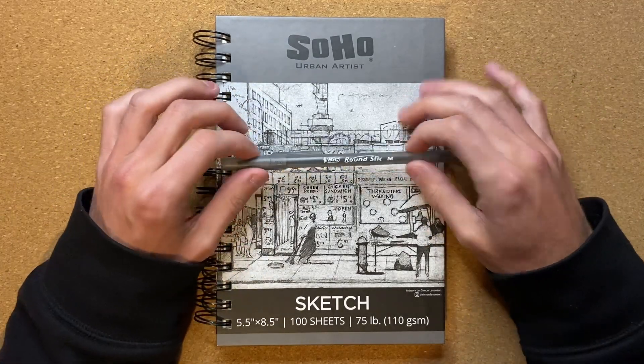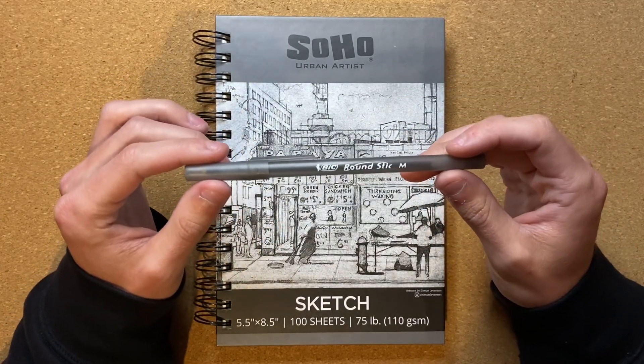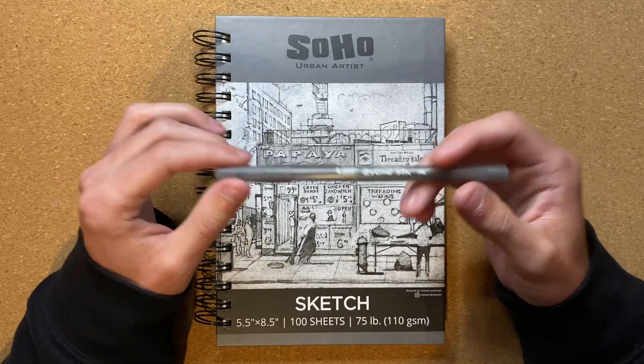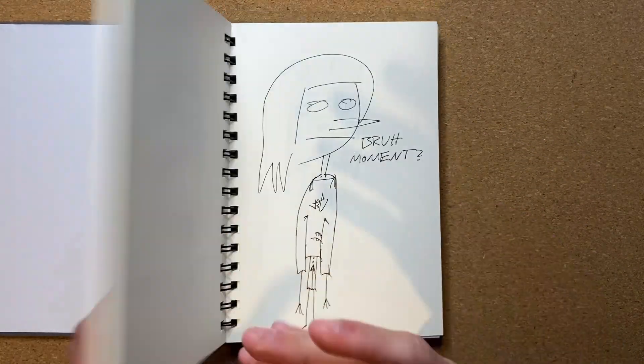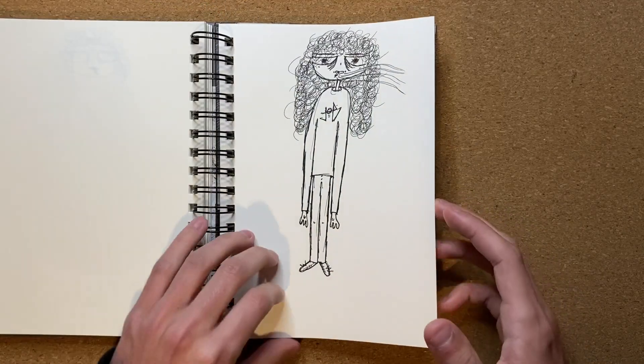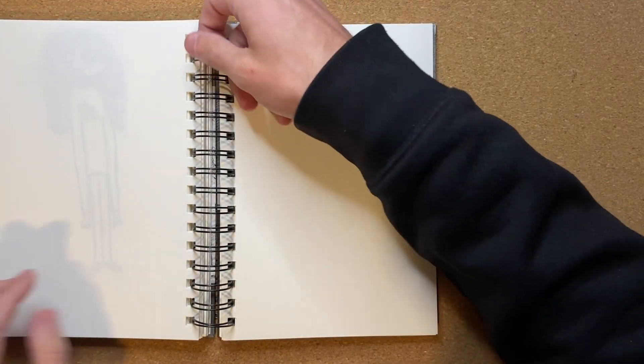Today I'm going to be drawing in my Soho Urban Artist Sketchbook, and I'm going to be drawing with my Bic Round Stick Ballpoint Pen. But without further ado, let's go ahead and get my sketchbook all opened up, and let's go ahead and flip to the nearest open page and get to drawing.